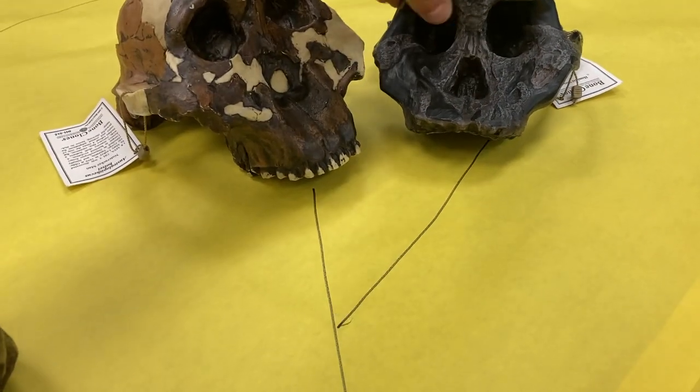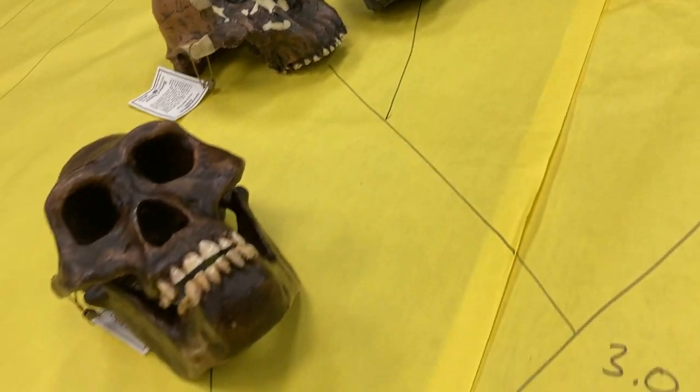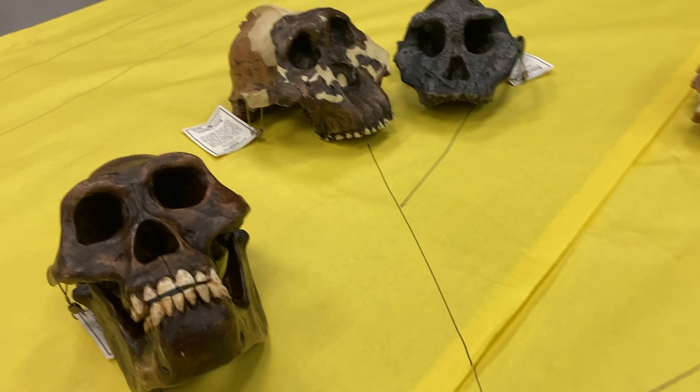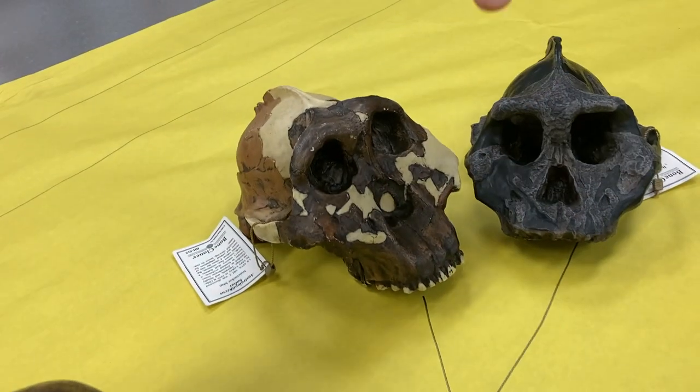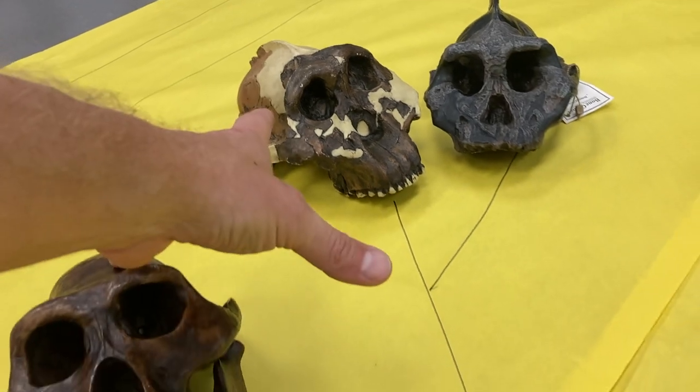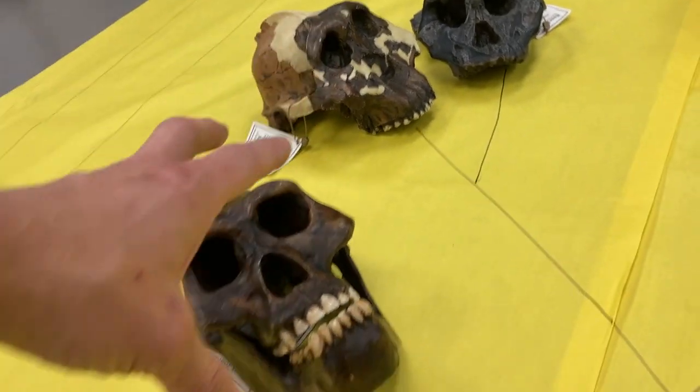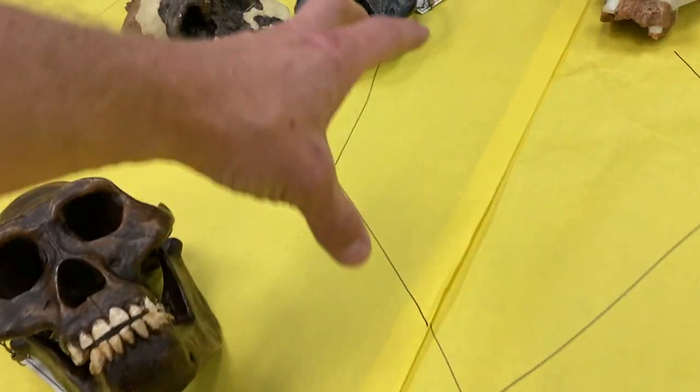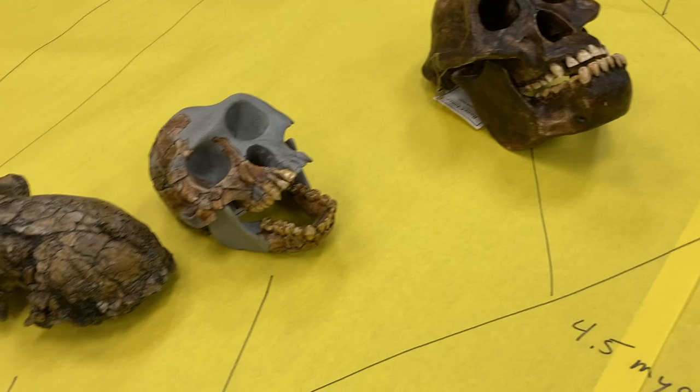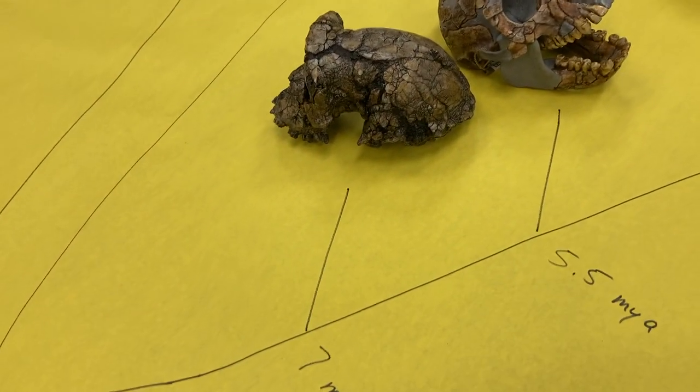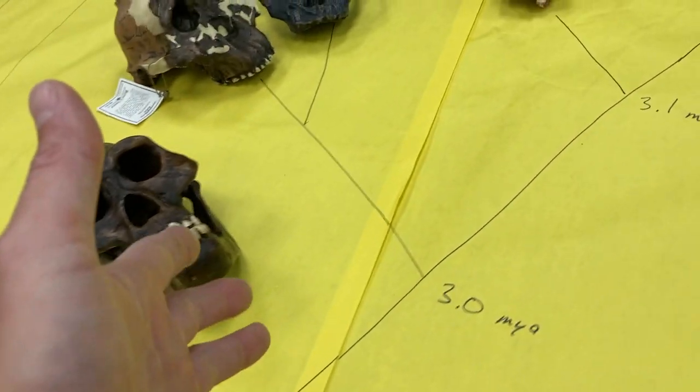But there's a common ancestor somewhere back here. And as we move forward, we run into the first one here, Sahelanthropus, who definitely looks the oldest and most chimpy of any of the skulls that we've got up here. And as we move forward from there, we meet Artie, Ardipithecus. Still a very small head. Looks quite chimpy, but it's getting some more modern features a little bit. The Australopithecines show up. Lucy.